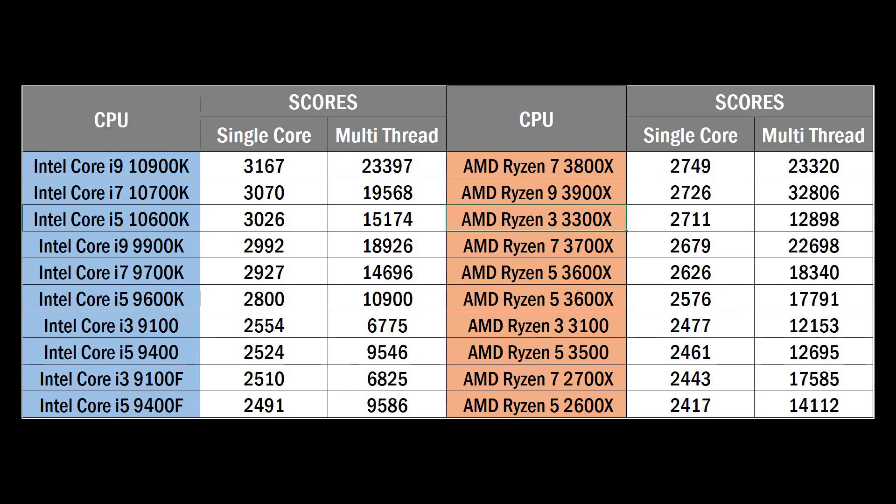If you don't need a separate graphics card, you can select an Intel iGPU processor such as the i3-9100, i5-9400, 8th gen i5-8400, 10th gen i3-10300, i5-10600K, or i5-9600K. For medium range, processor options include the Ryzen 5 3500, Ryzen 5 3600, Ryzen 5 3600X, and i5-9600.